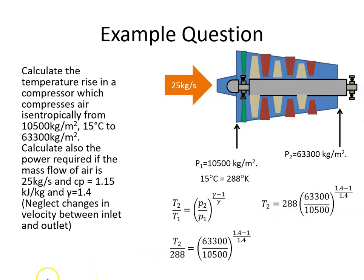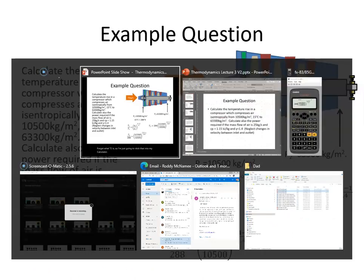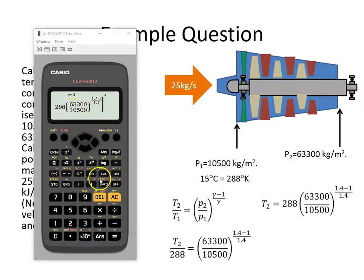I'm just going to stick that into my calculator. I've typed the values into the calculator here, and if I press enter, I get 481 degrees Kelvin. So temperature 2 is 481 degrees Kelvin.